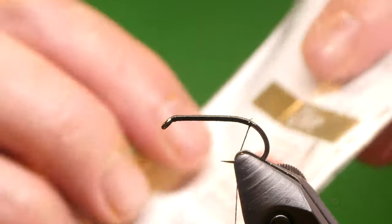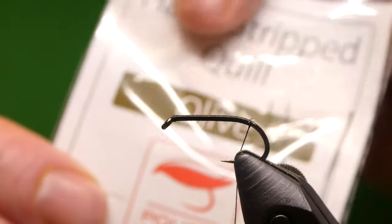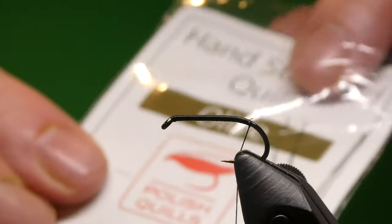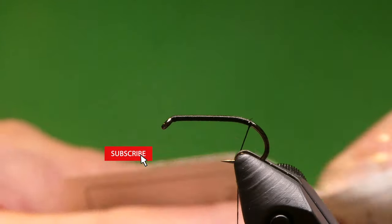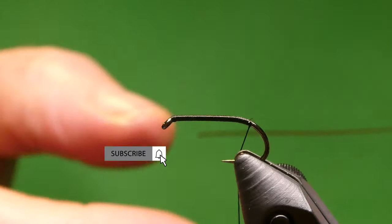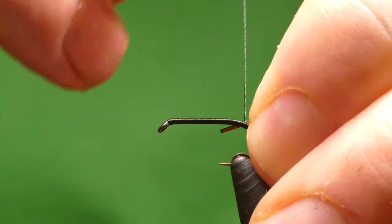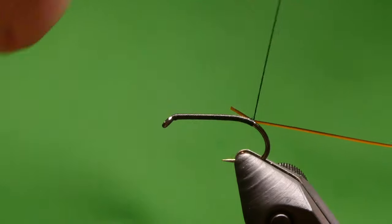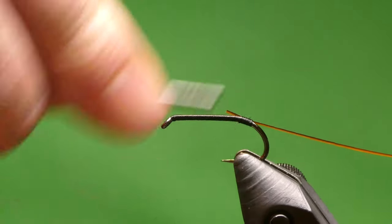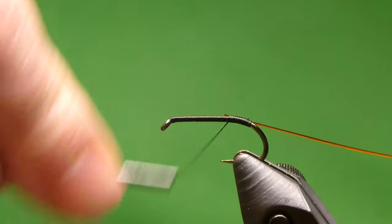The quills I'm using is the Fario—sorry, the Polish quills—in olive. So just tie that in and bring the thread back up the hook with touching turns.